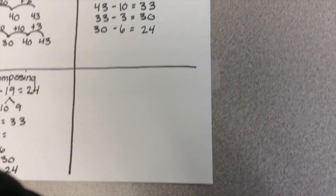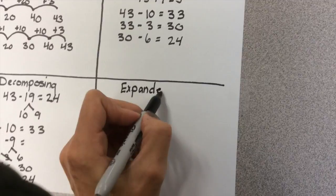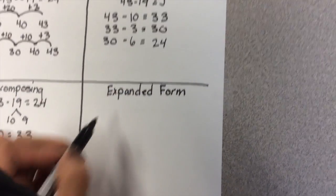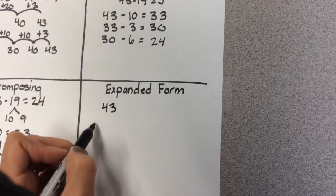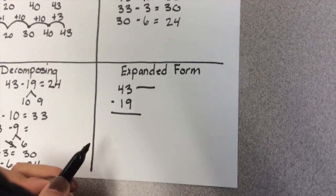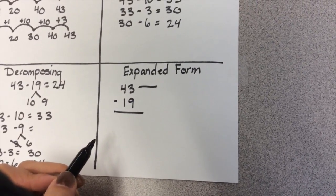And the final strategy is expanded form. For this strategy, we have 43 minus 19. We're going to expand out 43. So typically kids are going to first see expanding out 43 as 40 and 3.